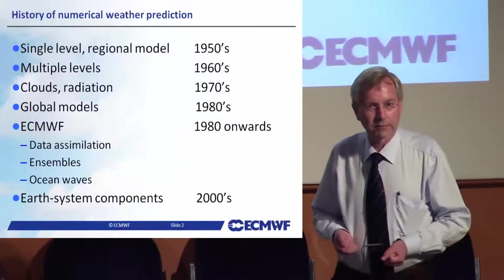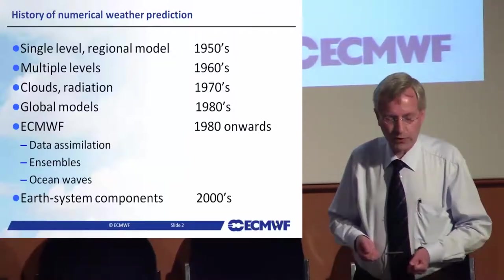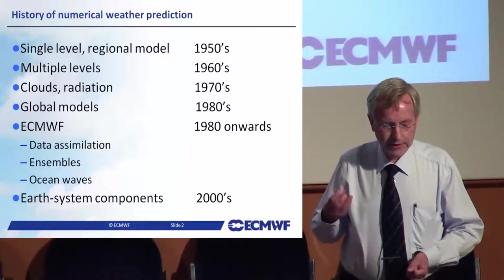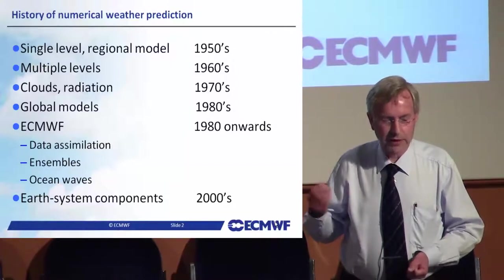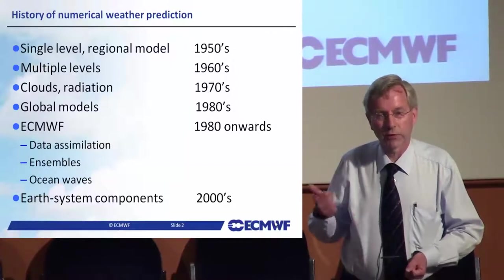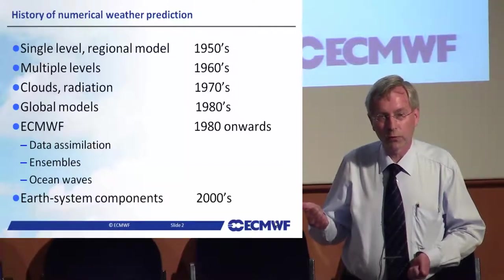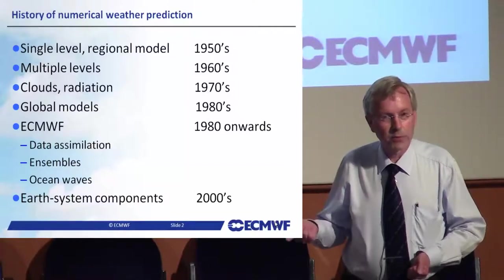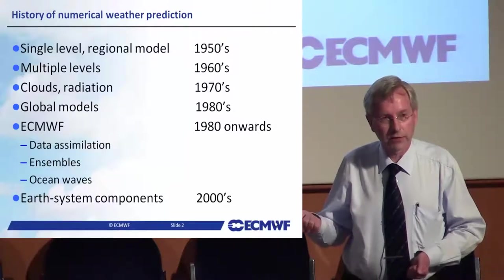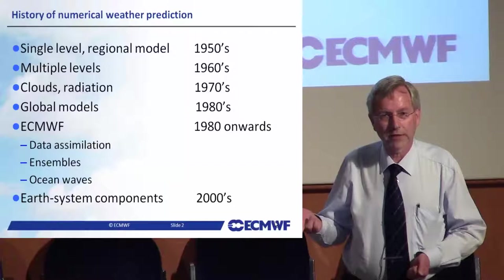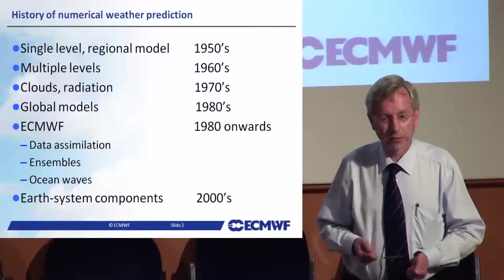Then ECMWF came, and operational forecasts started in 1979. The key components developed at ECMWF were data assimilation, improved use of all observations, the ensemble technique for determining forecast uncertainty, and ocean waves — which was also pioneered here at ECMWF.